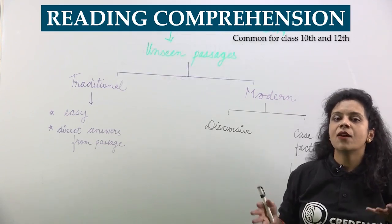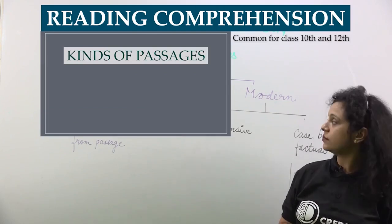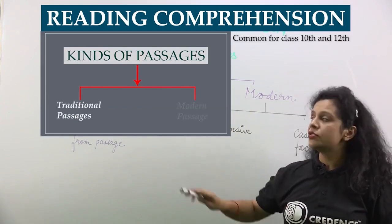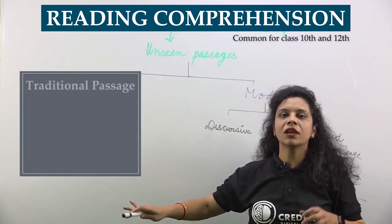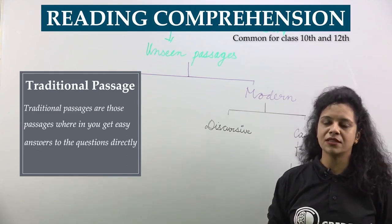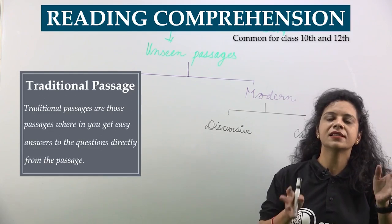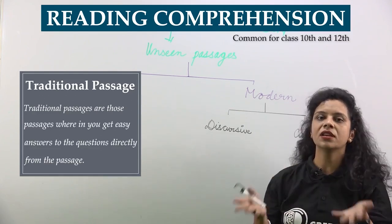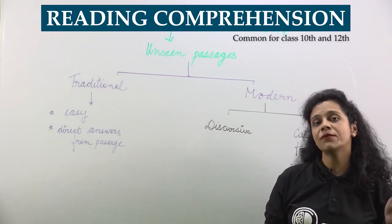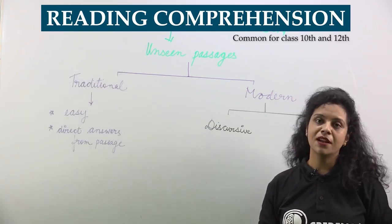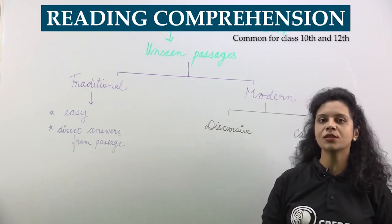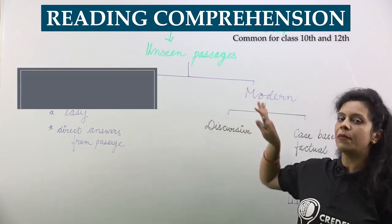First, let us understand what kinds of passages are asked in the exam. We basically have two kinds of passages: traditional and modern. Traditional passages are those wherein you get easy answers to the questions directly from the passage — you read the question, pick the line from the passage as-is, write it as the answer, and you get full marks. Previously CBSE used to give traditional passages to children, but now they have understood that students solve traditional passages too easily, so now they have shifted to modern passages.